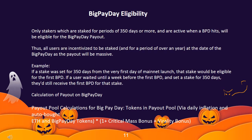Big Pay Day eligibility: only stakers staked for periods of 350 days or more who are active when a BPD hits will be eligible for the Big Pay Day payout. All users are incentivized to be staked for a period of over a year. For example, if a stake was set for 350 days from the very first day of mainnet launch, that stake would be eligible for the first BPD. Even if a user waited until a week before the first BPD and set a stake for 350 days, they'd still receive the first BPD for that stake. The payout pool is calculated via daily inflation, auto-bought ETH, Big Pay Day tokens, and multiplied by a critical mass bonus and virality bonus.